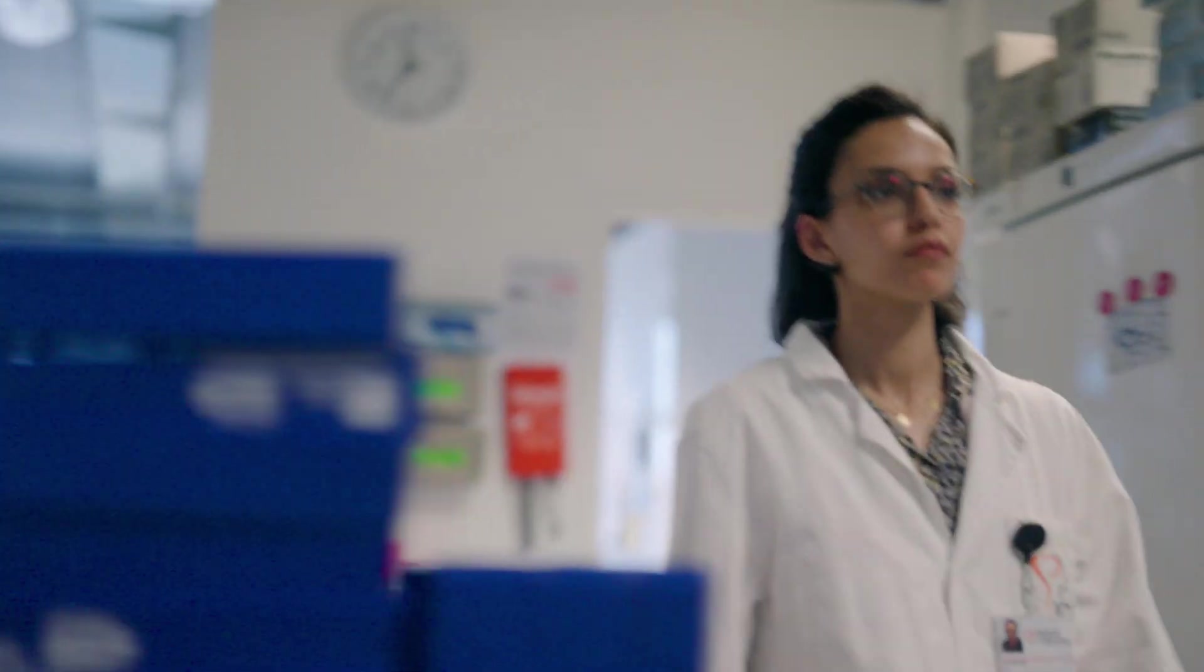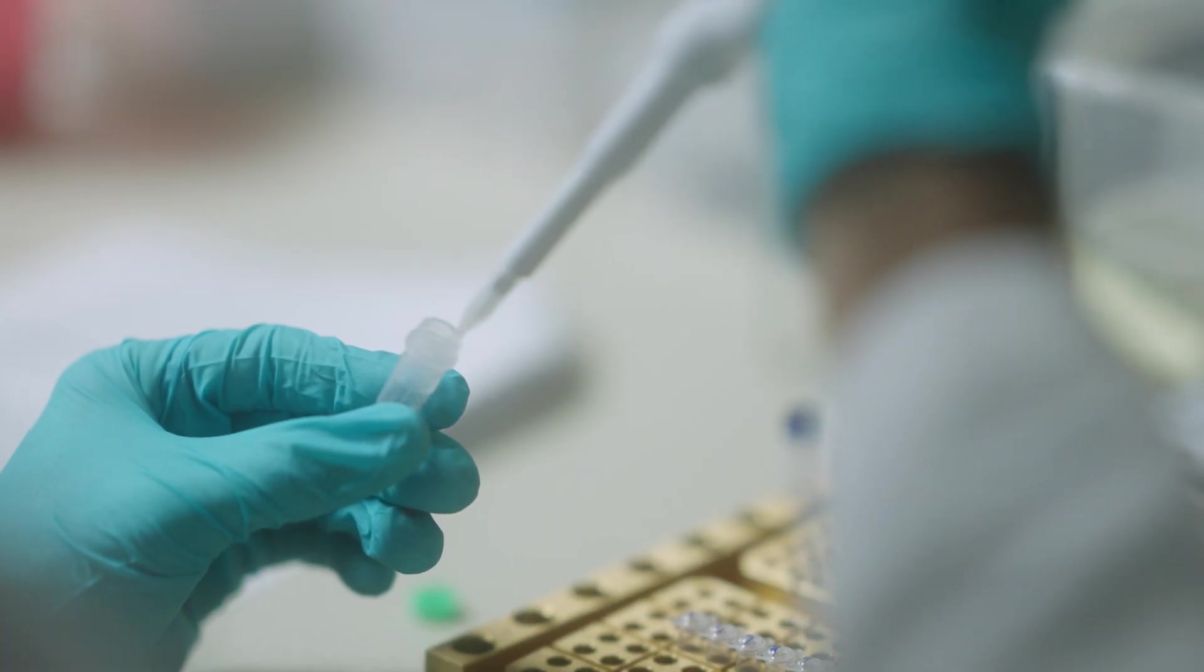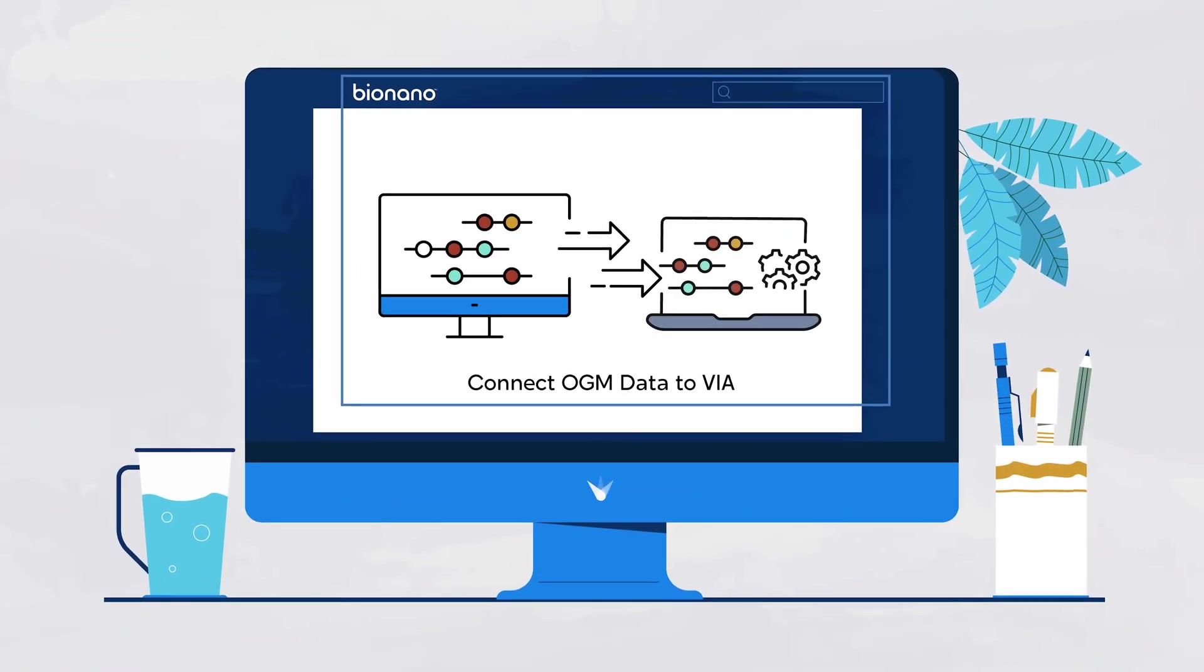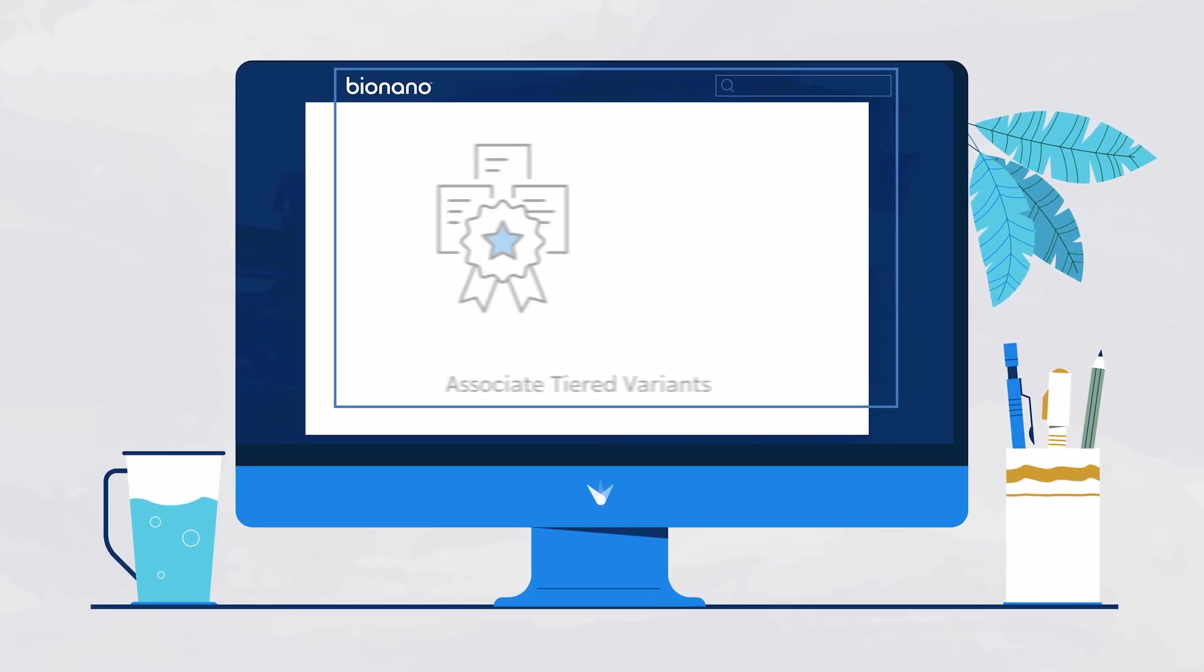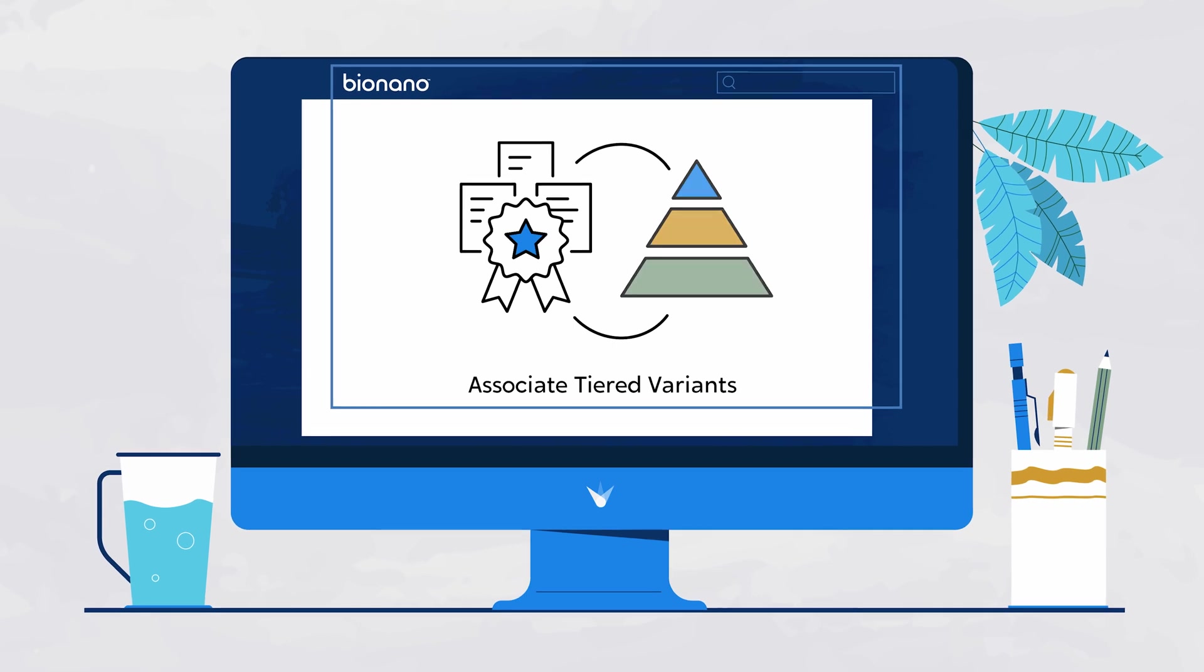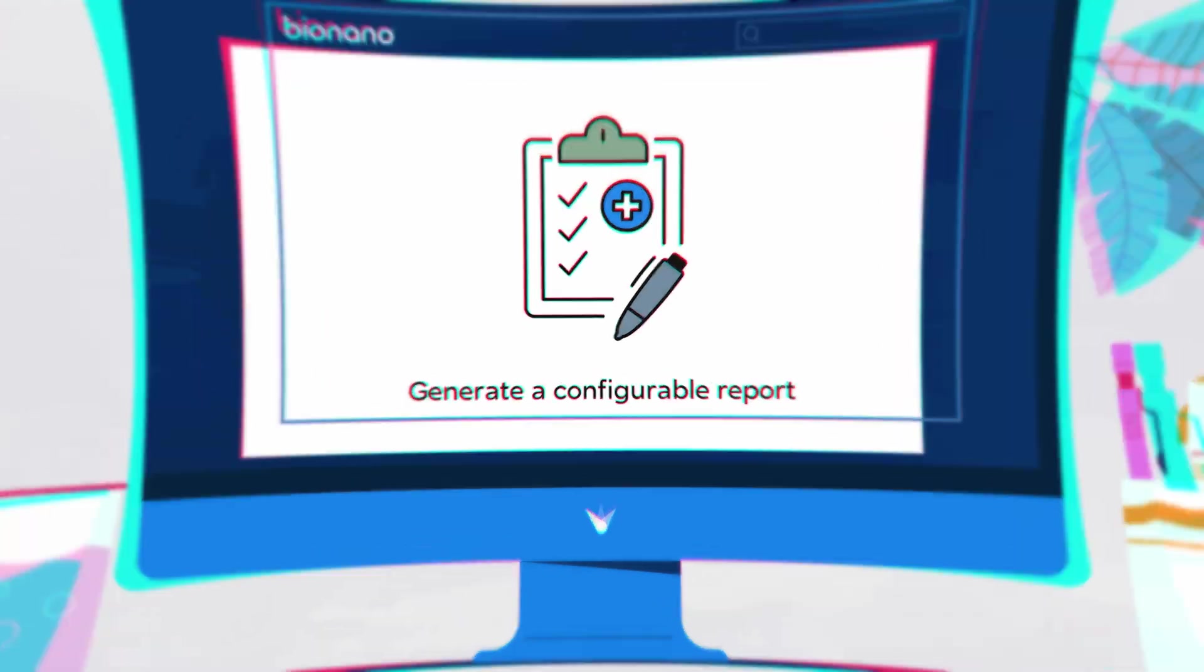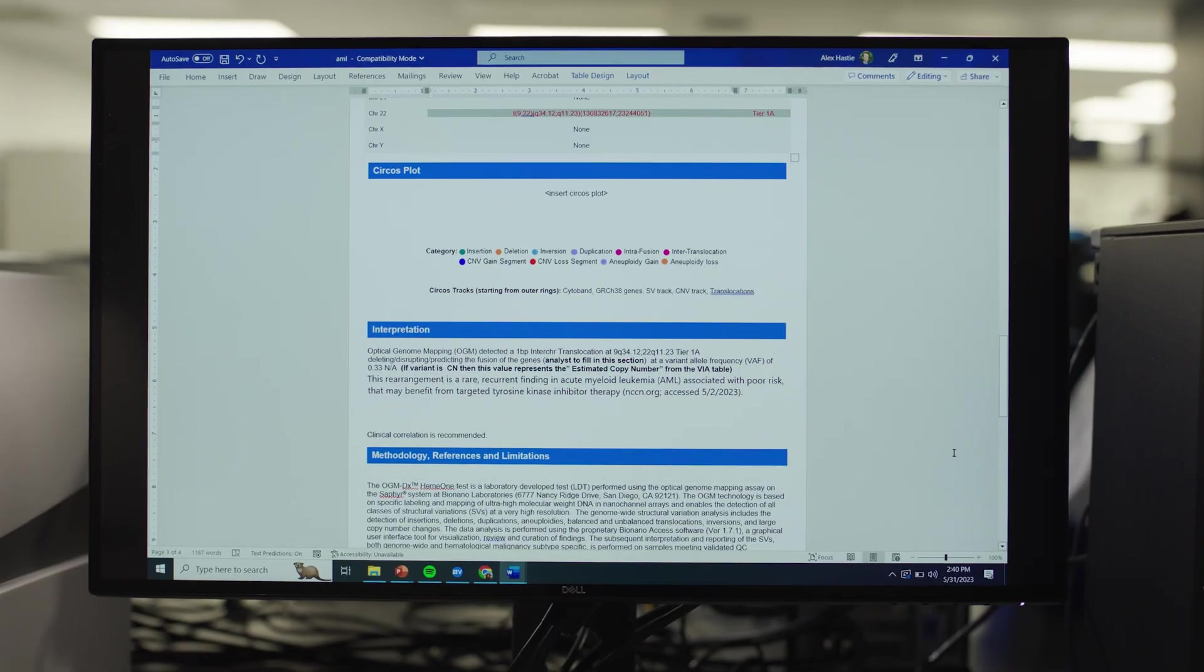Working on hematological malignancy samples? We have even better news for you. VIA comes with a specialized workflow that applies intelligent automation, leveraging curated resources from key society guidelines to accelerate taking your OGM data to a comprehensive report that has all the relevant sample and disease information clearly articulated.